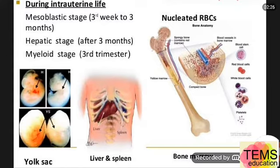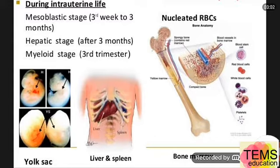In the myeloid stage, during the last three months of intrauterine life, red blood cells are produced in the red bone marrow, as you can see here.